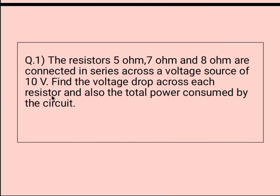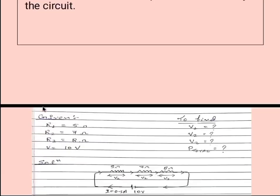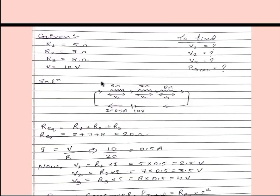The resistors 5 ohm, 7 ohm, 8 ohm are connected in series across a voltage source of 10 volt. Find the voltage drop across each resistor and also the total power consumed by the circuit. So I have made one simple diagram in which 5 ohm, 7 ohm and 8 ohm are connected in series and connected across a potential difference of 10 volt.